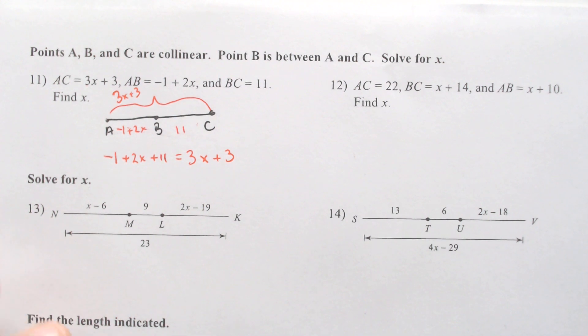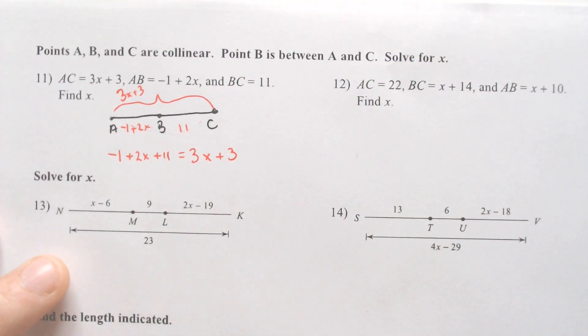Don't be intimidated by it. You just write it. Negative 1 plus 2X plus the 11, that's the two smaller parts, would equal the whole way across, which is the 3X plus 3. Now we just solve.